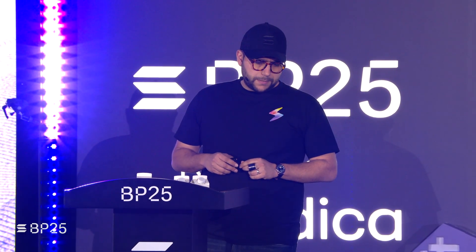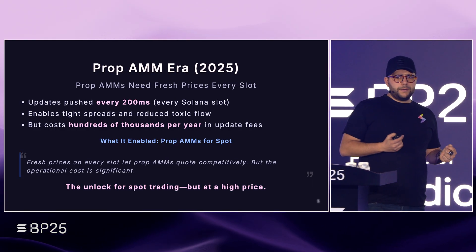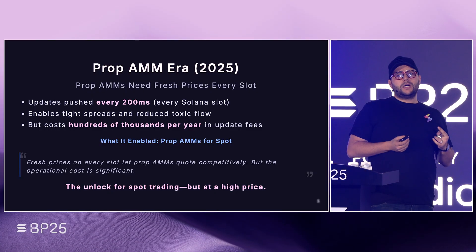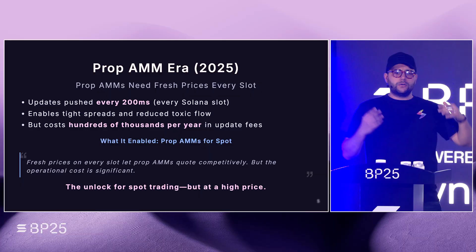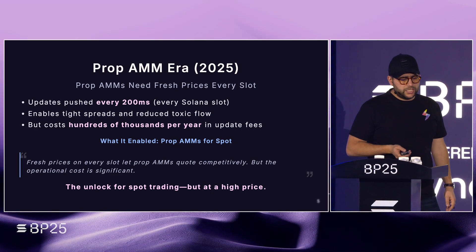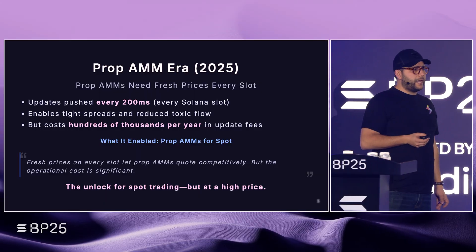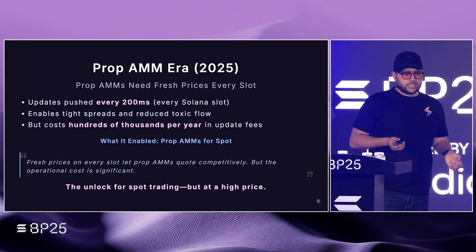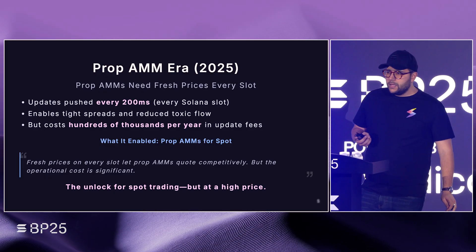Now we're in the era where everyone's talking about prop AMMs — they're taking over all spot traffic. A prop AMM is like a traditional AMM with two treasuries of assets, where the price is based off the levels of the pools, but now market makers are constantly quoting what they're willing to price, pushing their own oracle updates every single slot. Although this is very expensive, we've optimized Oracle updates down to about 20 compute units on-chain.